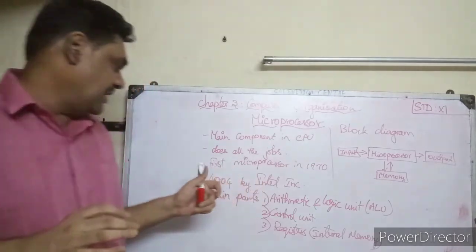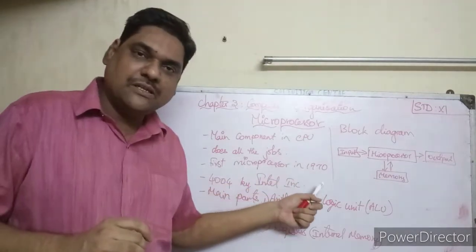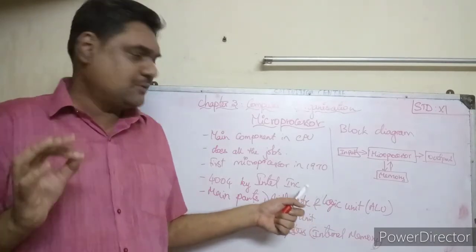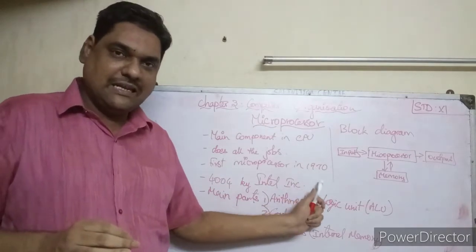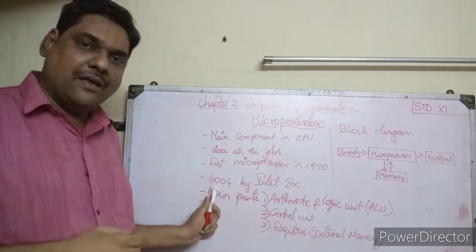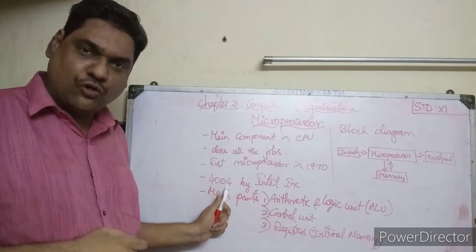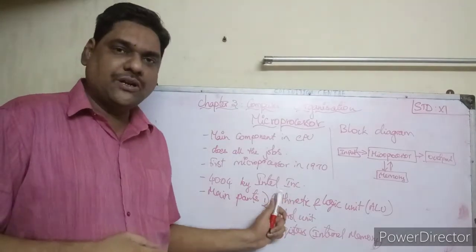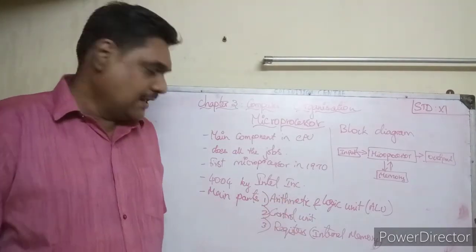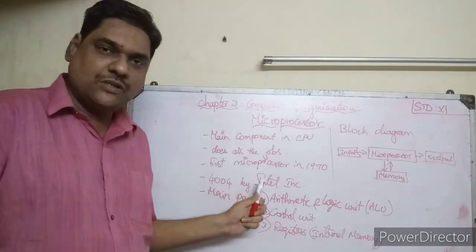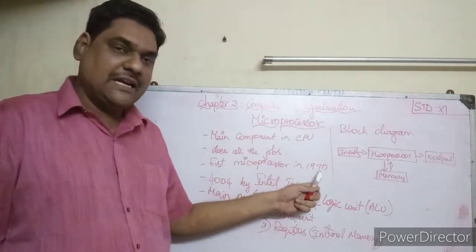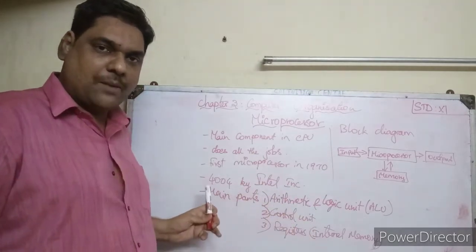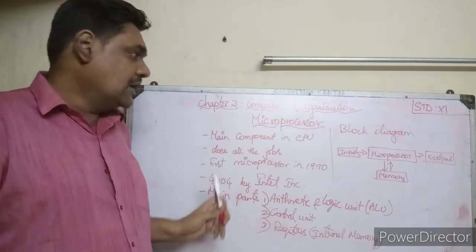The first microprocessor came into existence in the 1970s. The first microprocessor was the 4004, developed by Intel Corporation — INC stands for incorporation. Intel was the company that produced the first microprocessor in 1970.